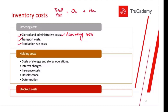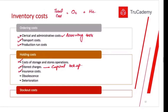Once we order inventory, we also need to hold it in a warehouse or storeroom, and there are numerous costs for that. These include cost of storage, interest charges — meaning the more inventory you buy, the more capital you lock up that could otherwise be invested for profit — insurance costs, and costs of obsolescence, damage, deterioration, or wastage, because the more inventory you hold, the more wastage occurs.